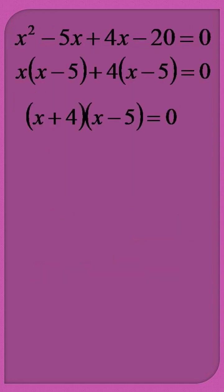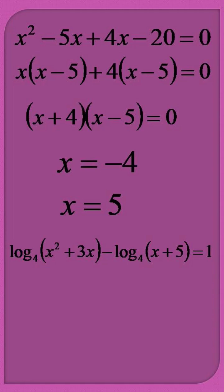This equation is factorized to give x plus 4 into x minus 5 is equal to 0, and we get two values of x as equal to minus 4 and 5. For this equation, both values are true and they satisfy the equation.